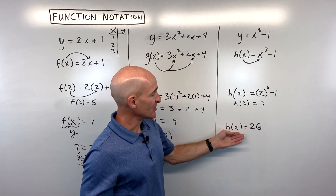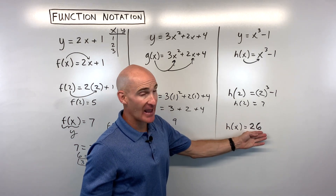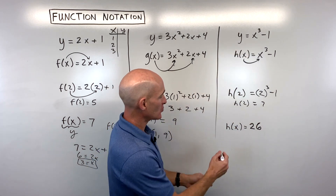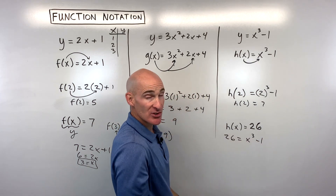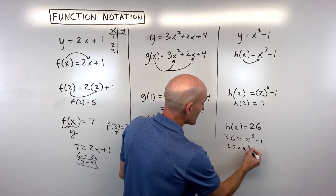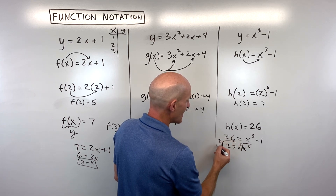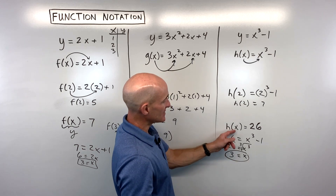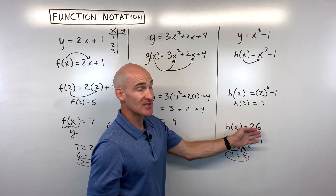Now this one is a little bit different — there's just the variable x, but they're saying the answer is 26. The output, the y value, is 26. So we solve for x, which is our input. Adding 1 to both sides gives us 27 equals x cubed, then we take the cube root of both sides. The cube root of 27 is 3, so h of 3 is equal to 26 — 3 is the input, 26 is the output.